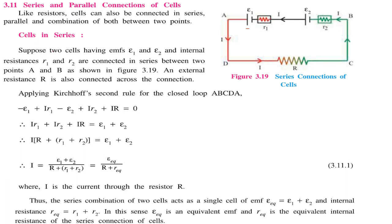When cells are in series, suppose we have two cells — the first having EMF E1, the second having EMF E2, with internal resistances R1 and R2. They are connected in series, meaning the current passing through both of them is the same. An external resistance R is also connected across the connection. We will apply the Kirchhoff rule.